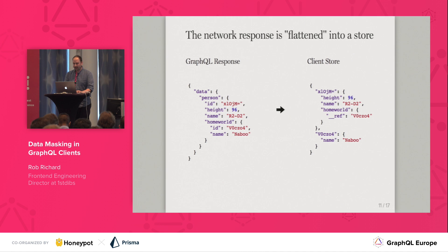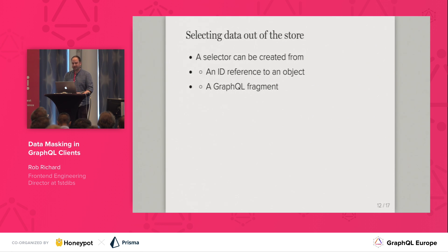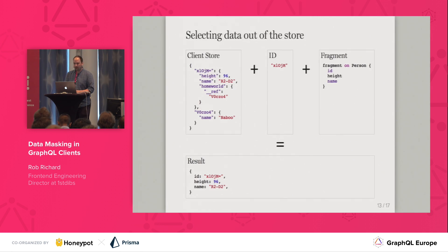Nested objects can be referenced by their ID using the underscore ref property. A selector is created from an ID reference to an object and a GraphQL fragment.